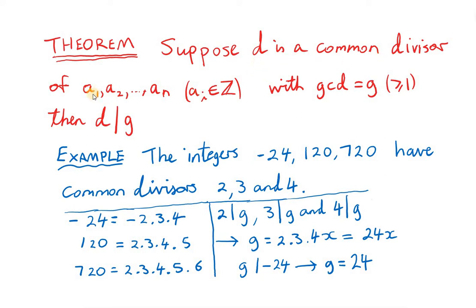Suppose d is a common divisor of the integers a1, a2, up to an. We will call the greatest common divisor of those integers g, and we define g to be a positive integer. Then d divides g. So any common divisor of a set of integers will divide the greatest common divisor of those integers.